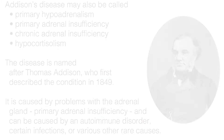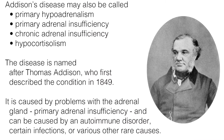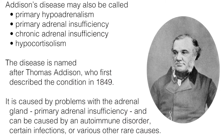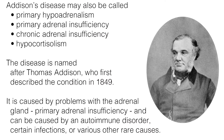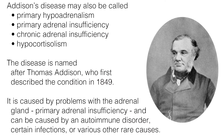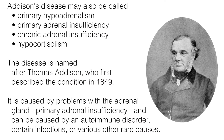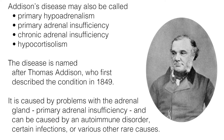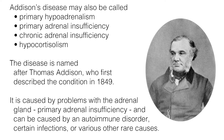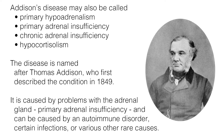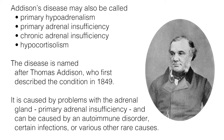Addison's disease may also be called primary hypoadrenalism, primary adrenal insufficiency, chronic adrenal insufficiency, or hypocortisolism. The disease is named after Thomas Addison, who first described the condition in 1849.